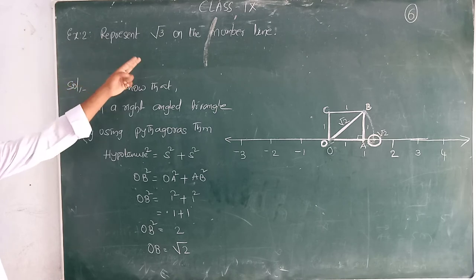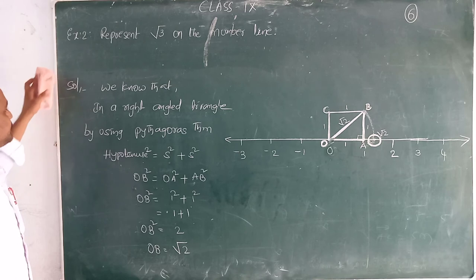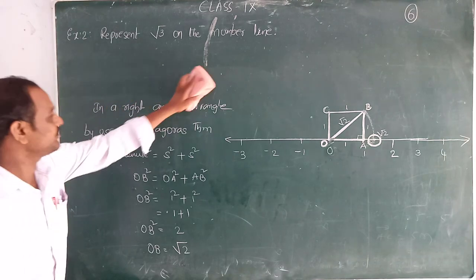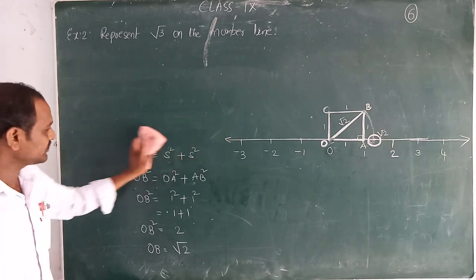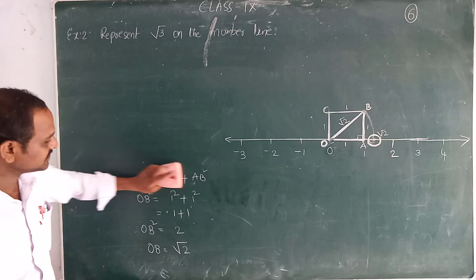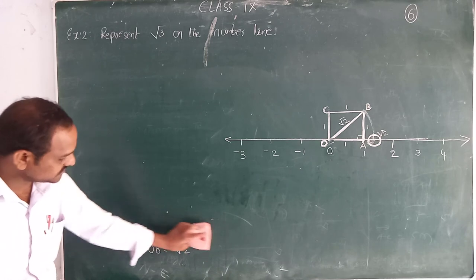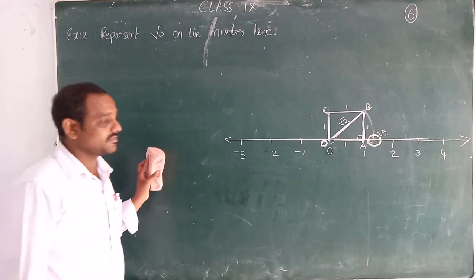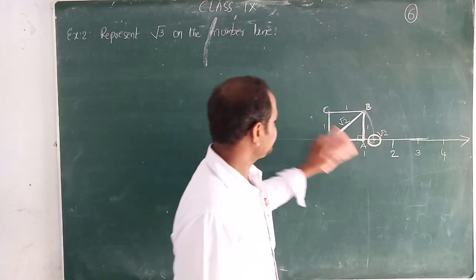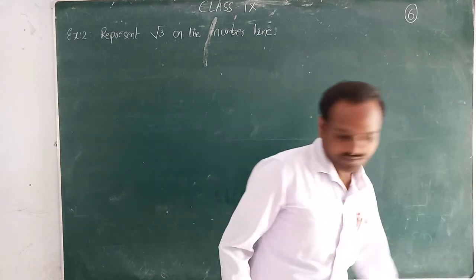After completing the write-down, the next question: represent root 3 on the number line. So now we are going to represent root 3 on the number line. How to represent root 3? The process is set.